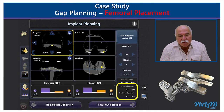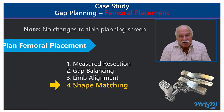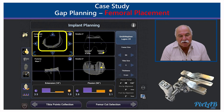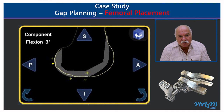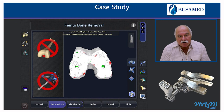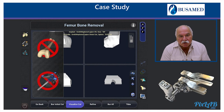For limb alignment, we started with 9 degrees of varus dynamically and ended up planning at 2 degrees of varus, which is within our acceptable range. For shape matching, the posterior surface of the femur matches well, the distal femur matches well, superiorly it matches well, and on the sagittal view it is also matching well. We have ticked all the boxes and are ready for our femoral cut.